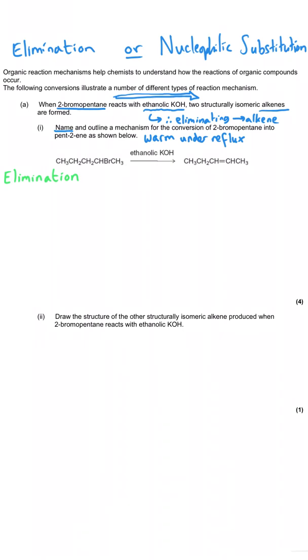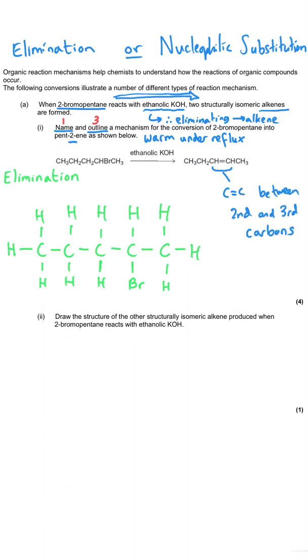We've been asked to name and outline a mechanism, so we'll get one mark showing that it is elimination, and then we've got three marks for the actual mechanism. So the thing to be careful of here is to make sure that you're making the right product. So we're making pent-2-ene, and that's really important because the bromine, when it's in the second position, as I've shown here when I've drawn the full displayed formula of 2-bromopentane, is the bromine is going to leave. When you draw a halogen-alkane mechanism, the carbon-to-bromine bond always breaks. And in fact, one of the halogens will always take the electrons from the bond.